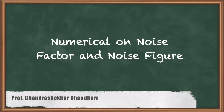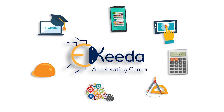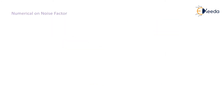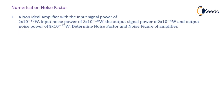We will now look at numericals on noise factor and noise figure. A non-ideal amplifier has an input signal power of 2×10⁻¹⁰ W, input noise power of 2×10⁻¹⁸ W, output signal power of 2×10⁻⁴ W, and output noise power of 8×10⁻¹² W.